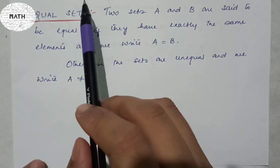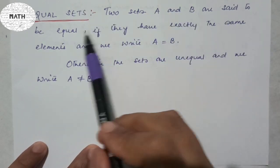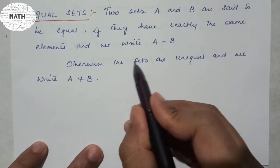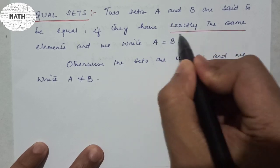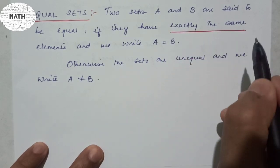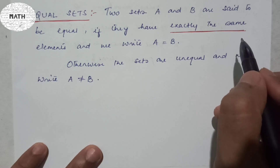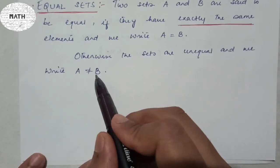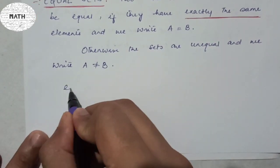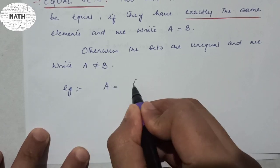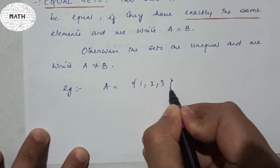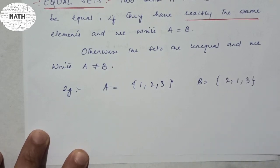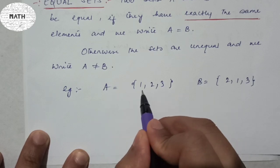The next topic is equal sets. Two sets A and B are said to be equal if they have exactly the same elements, and we write A = B. If the elements are not exactly the same, the sets are unequal and we write A ≠ B.